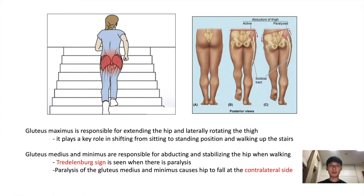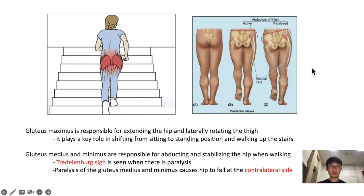The gluteus medius and minimus are the key muscles for abducting and stabilizing the hip when walking. If your left leg is elevated off the ground, the gluteus medius and minimus are active to keep the foot off the ground so you can take steps. However, if your gluteus medius and minimus are paralyzed, the hip won't be able to stay level and your foot will not be able to clear the ground when walking. In medicine, when your hip droops to one side with each step, that's called a Trendelenburg sign, and it's seen when there's paralysis of the gluteus medius and minimus. Keep in mind that if these muscles are paralyzed on the right side, your hip will fall towards the left side. So here is a question: if you see a positive Trendelenburg and the patient is drooping towards the right side, which muscles are affected? The answer is the left gluteus medius and minimus muscles.